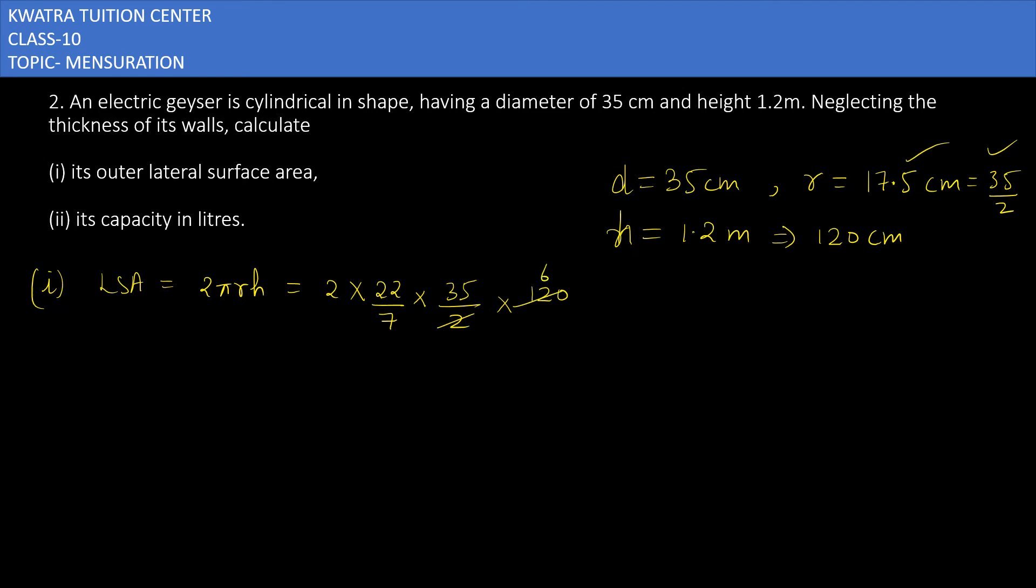So 2 and 120 can be cancelled, it will give you 60. 7 and 35 can be cancelled, it will give you 5. Multiplying all of these you will get 13,200 cm square.